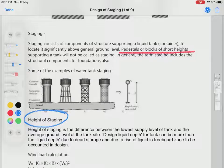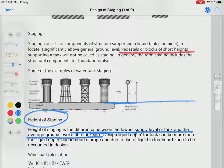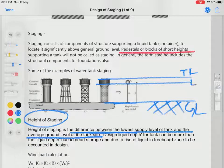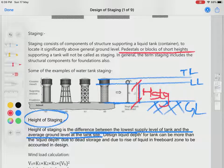Another important term is height of staging. Height of staging is the difference between the lowest supply level of tank and the average ground level at the tank site. This is the average ground level, but the tank has two levels—the top level and the lower level. The difference between the lowest supply level and ground level is considered height of staging, H_stg.